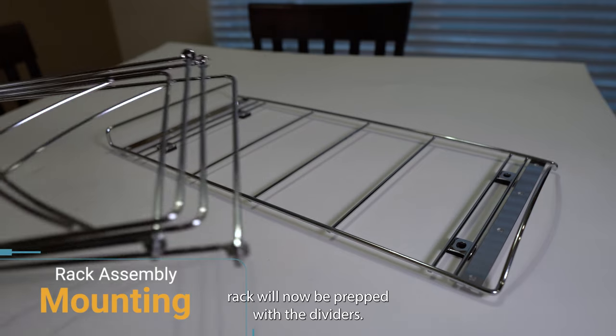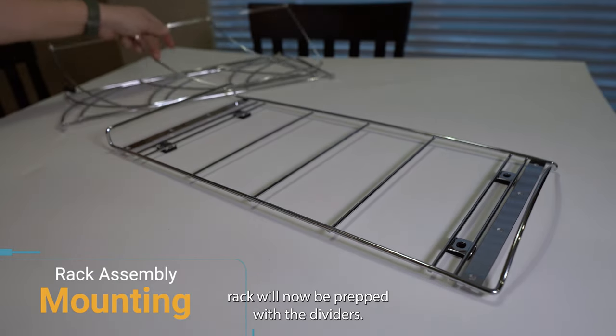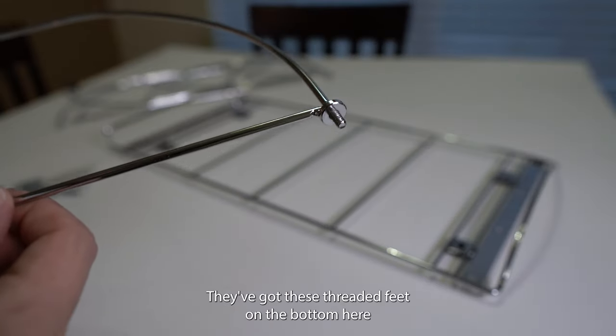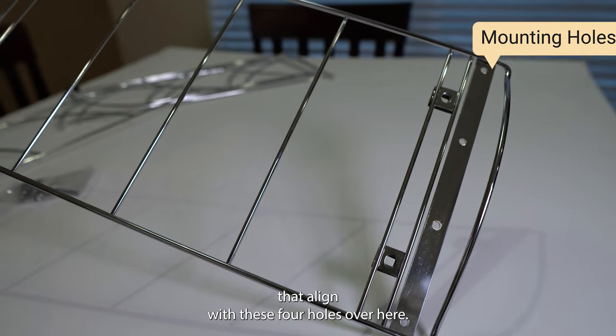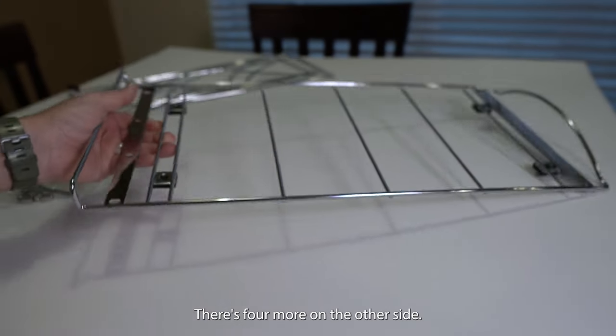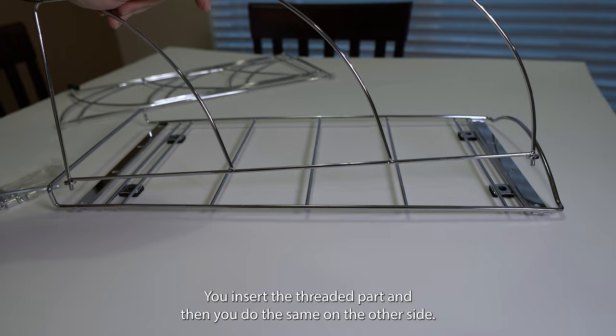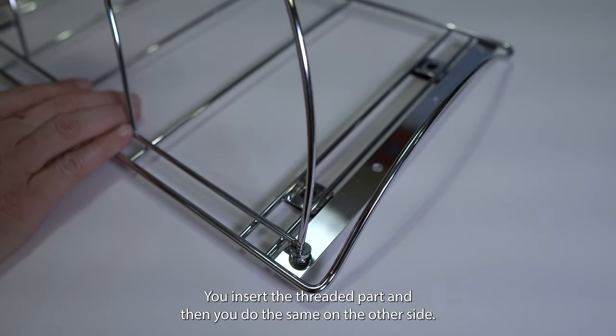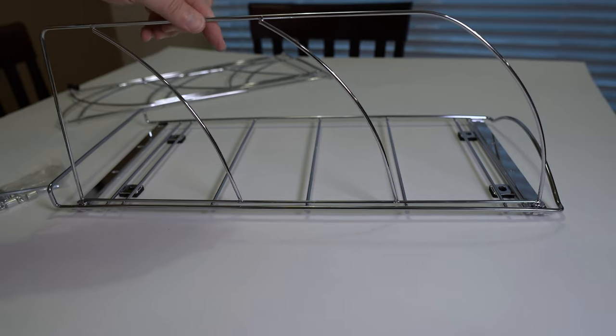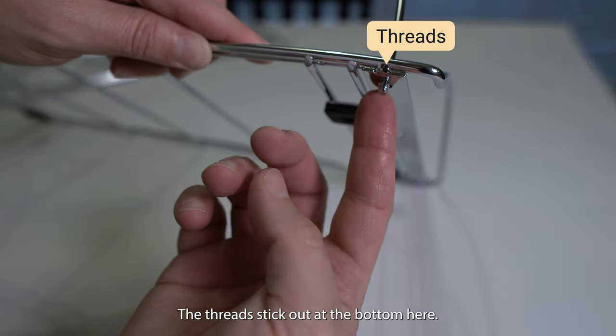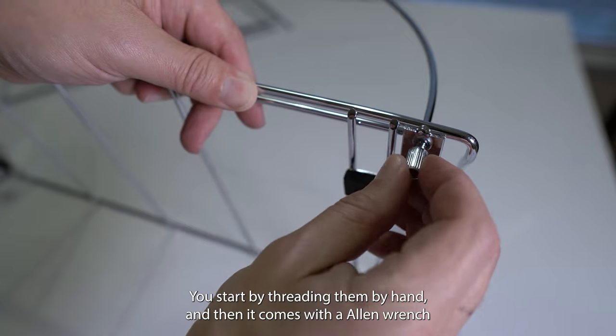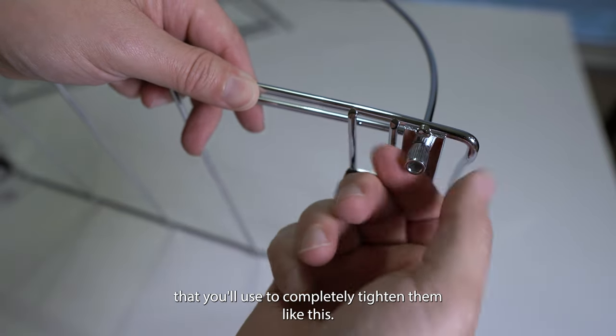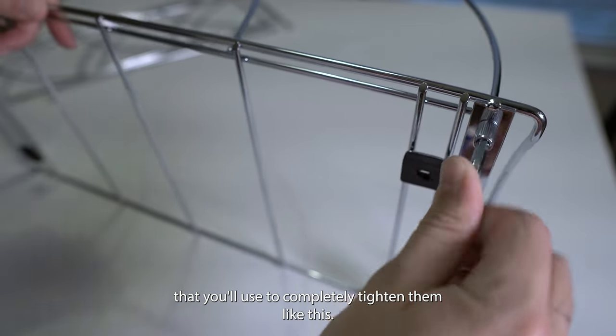So that wire rack will now be prepped with the dividers. They've got these threaded feet on the bottom here that'll align with these four holes. There's four more on the other side. So start on one side, you'll insert the threaded part, and then you'll do the same on the other side. The threads will stick out at the bottom here. The barrel shaped thumbscrews will be used to secure them in place. You start by threading them by hand and then it comes with an Allen wrench that you'll use to completely tighten them.